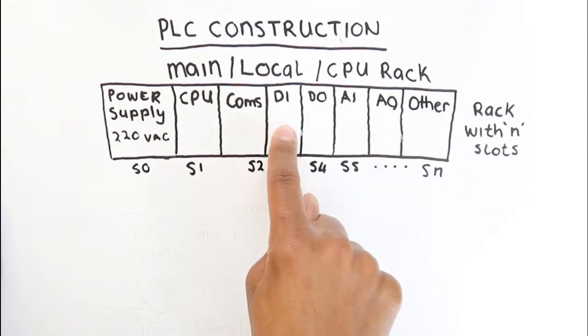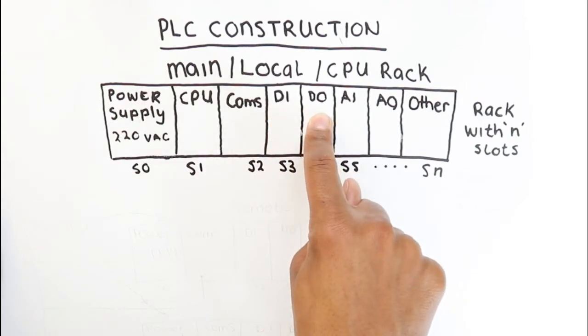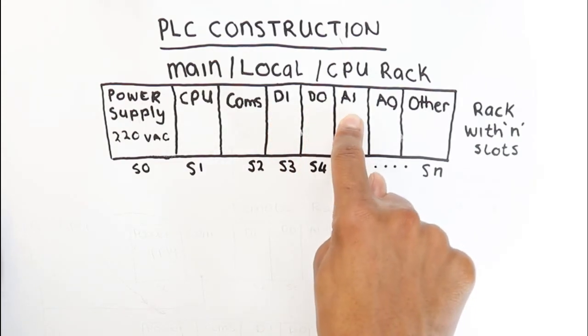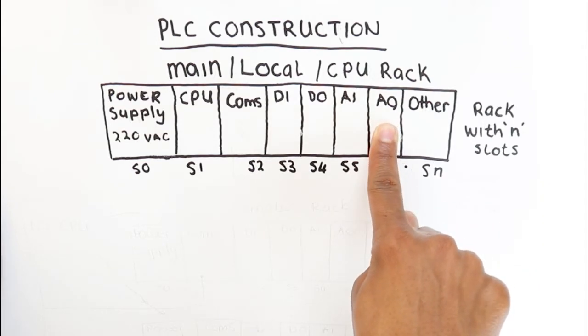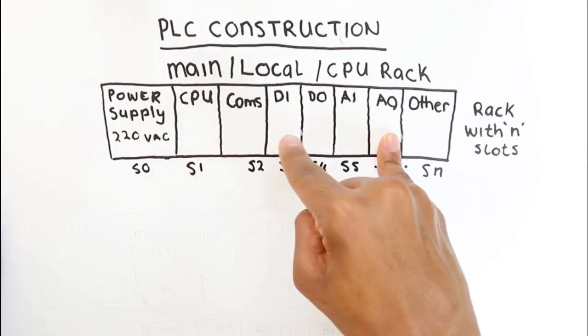Then after that, you'll typically have your IO cards. In this example, on this slot, which is slot number three, I put in the digital input card. Then you can have a digital output card, an analog input card, as well as an analog output card. I'm going to go into the details of what these cards do in a separate video.